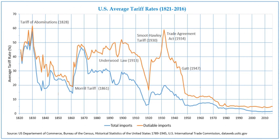Tariffs therefore provide an incentive to develop production and replace imports with domestic products. Tariffs are meant to reduce pressure from foreign competition and reduce the trade deficit. They have historically been used to protect infant industries and to allow import substitution industrialization. Tariffs may also be used to rectify artificially low prices for certain imported goods, due to dumping, export subsidies, or currency manipulation.